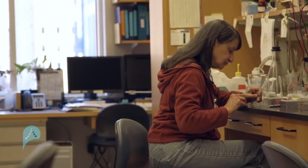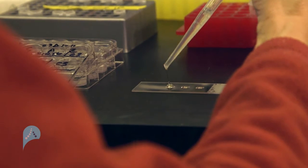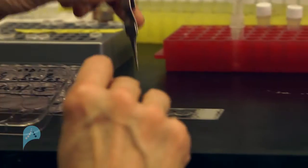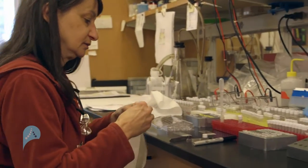I first found stress granules the same way I find everything, by accident. TIA1 was originally supposed to be something in a cell called natural killer cells, but somehow in making an antibody to it, the antibody actually recognized something else.